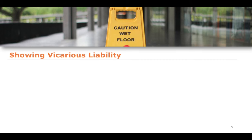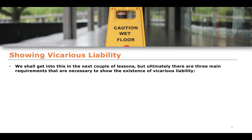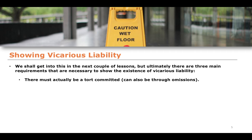So how does one show vicarious liability? Now that we have justified its existence, how does one actually demonstrate that vicarious liability exists? We will get into more detail in the next few lessons, but here are the main requirements. Essentially, there are three main requirements necessary to show vicarious liability, or for a claim in vicarious liability to have the potential to be successful. First, there must actually be a tort committed, or it can be done through an omission, and that tort must have caused damage to a third party.